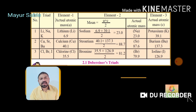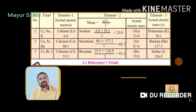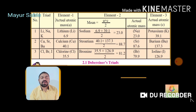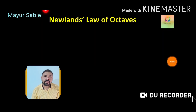Dobereiner successfully tried to classify elements into groups of three. But at the time he worked, all elements were not yet known to the world. Therefore, all elements did not follow the law of triads, and he was unable to give triads for all the elements known at the time. As a result, this classification by Dobereiner got lagged behind.